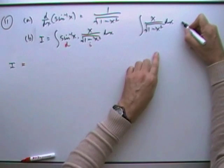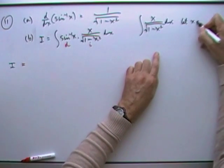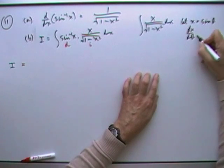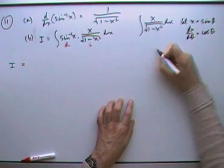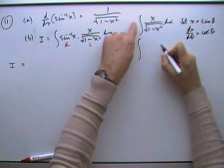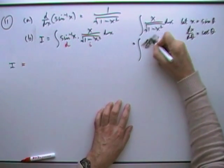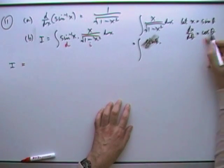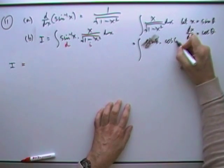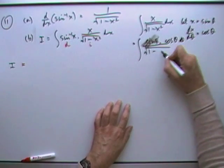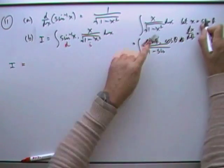Make that 1 minus sine squared. So I'm going to let x equal sine theta. So dx by d theta is going to be cos theta, which means this is going to come to sine theta times dx is cos theta d theta over the square root of 1 minus sine theta squared.